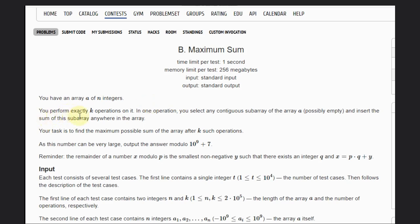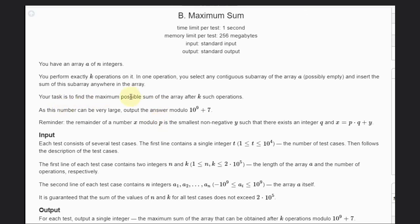In this problem we are given an array A of n integers. We need to perform exactly k operations on it. In one operation we can select any contiguous subarray of the array, possibly empty, and insert the sum of this subarray anywhere in the array. Our task is to find the maximum possible sum of the array after k such operations.